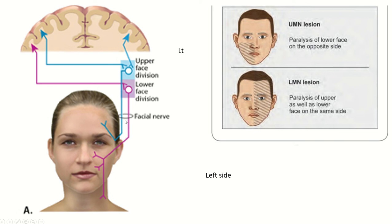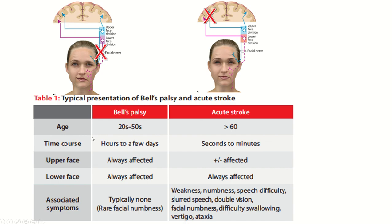But in a lower motor neuron type of paralysis, when the facial nerve is cut, both the upper part and the lower part are paralyzed. So this is the key difference between Bell's palsy and stroke. Stroke means a lesion of the upper motor neuron type, and Bell's palsy means a lower motor neuron type of lesion.